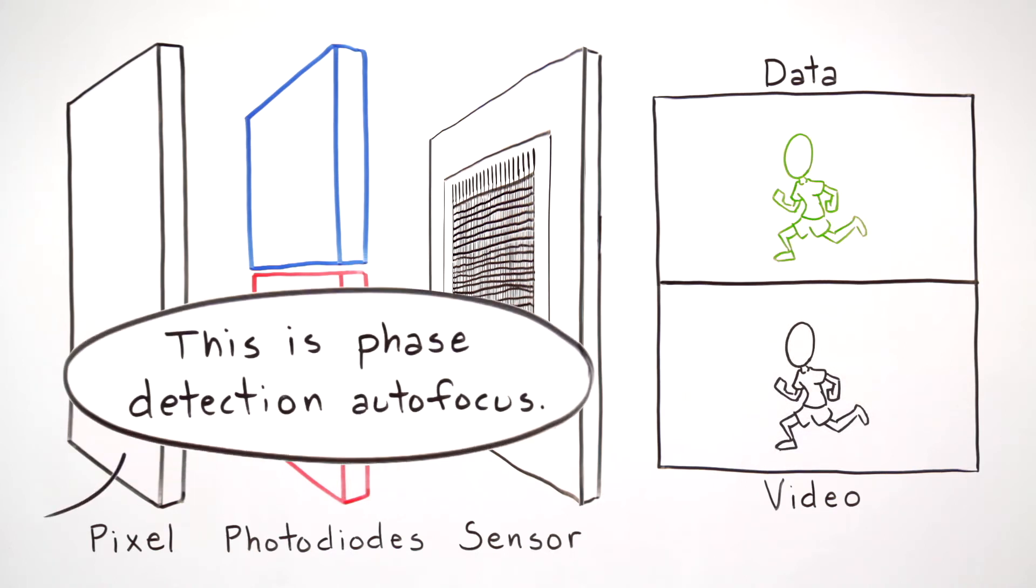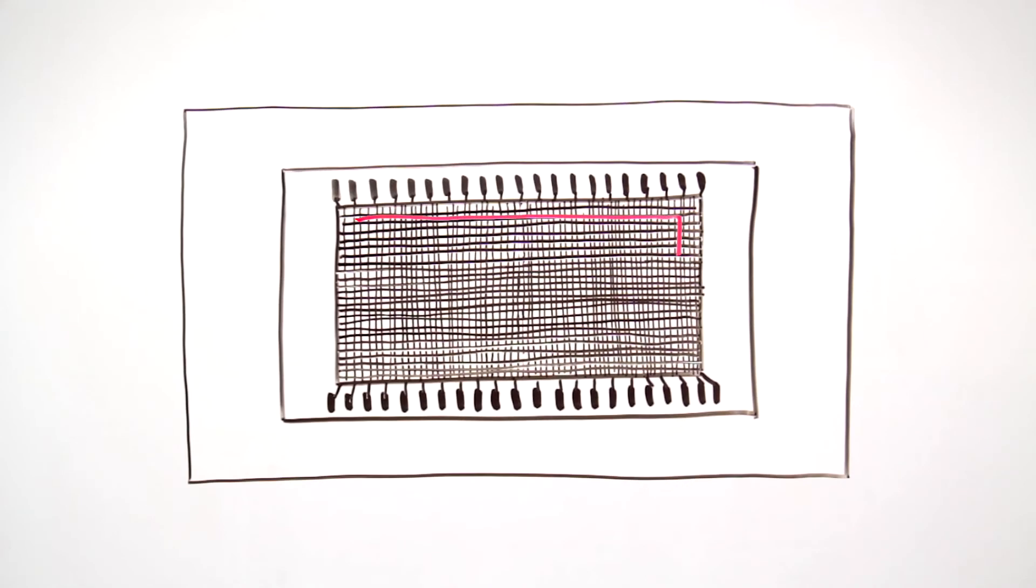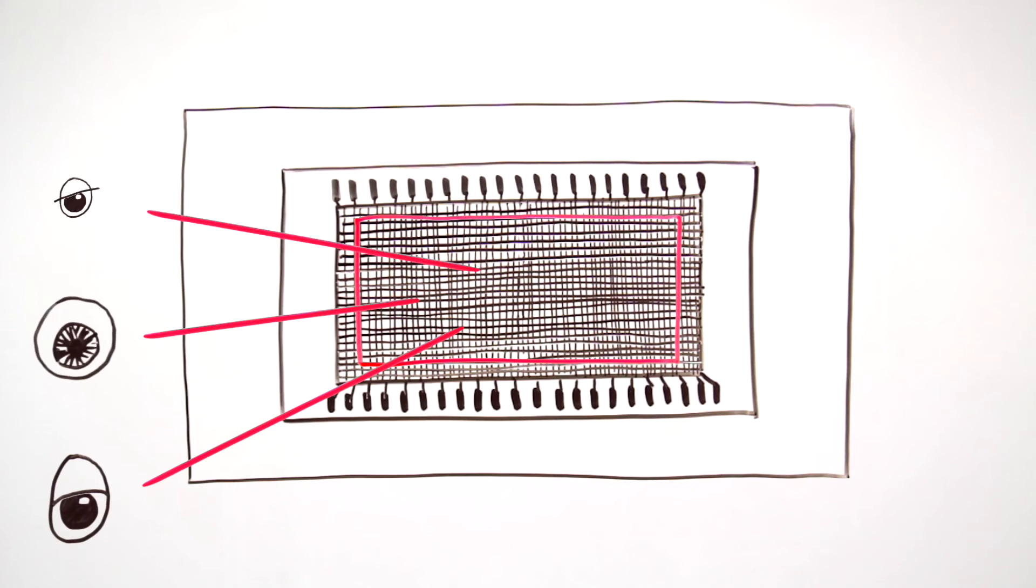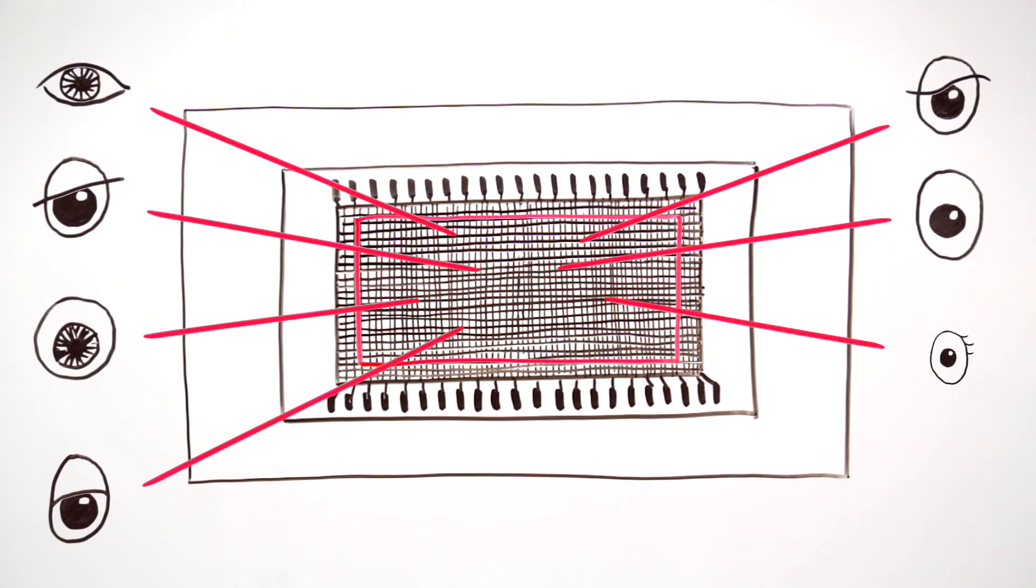This is known as phase detection. It's similar to technology used in viewfinder focusing. With most of the sensor used, the millions of detection diodes act like eyes following your subject.